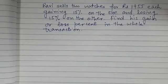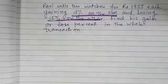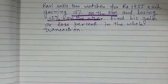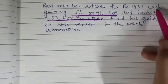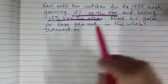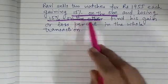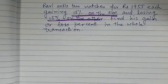Ravi sells two watches for rupees 1955 each, gaining 15% on one and losing 15% on the other. Find his gain or loss percent in the whole transaction. So Ravi has two watches and he has sold them for rupees 1955 each. When he is doing this transaction, he gains 15% on the first sale and he loses 15% on the other. We need to find the overall gain or loss percent when he makes this transaction.